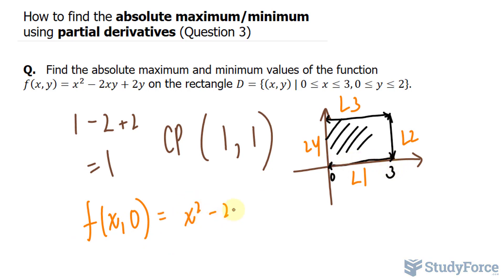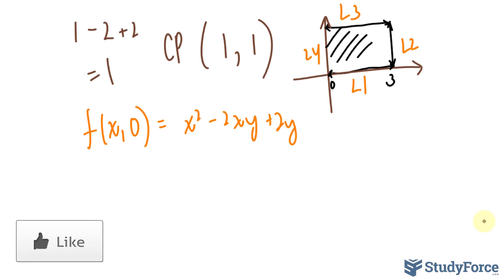It's equal to x squared minus 2xy plus 2y. So let's substitute those values, x and 0, that becomes x squared. This becomes 0 because we have a factor of y, and that's 0, so it becomes 0, and so does that.